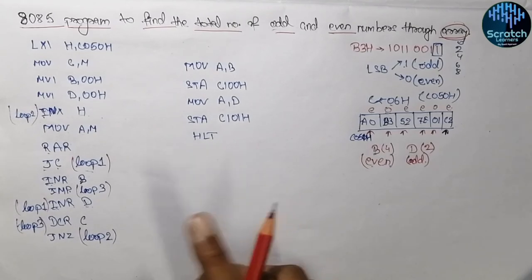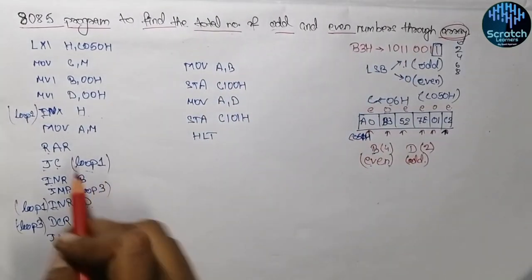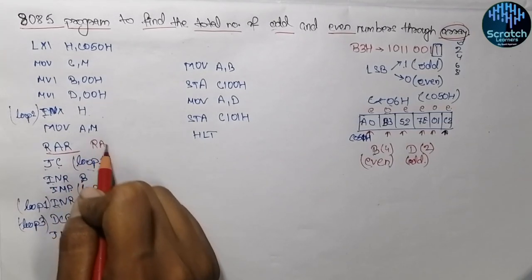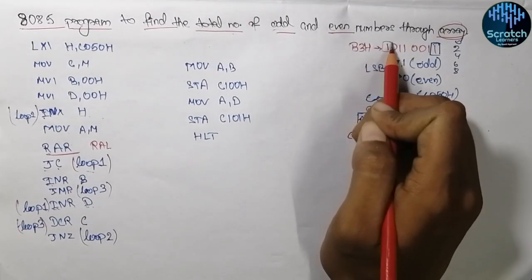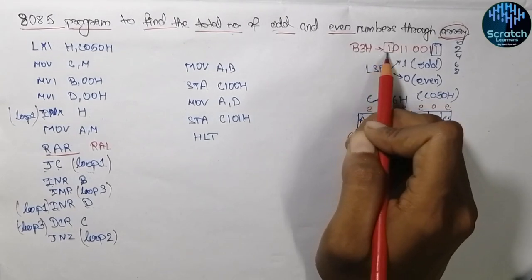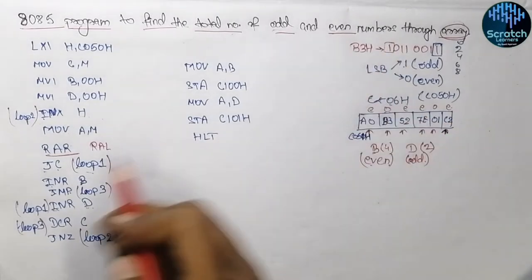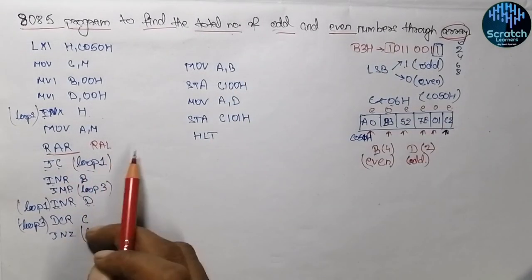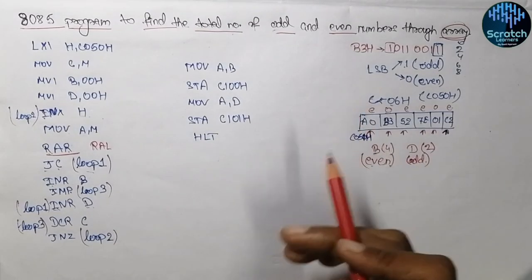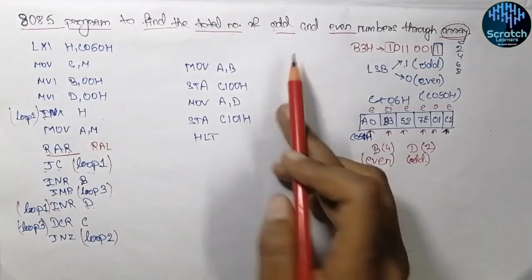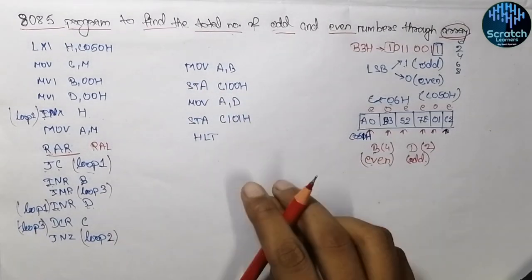By modifying just a single instruction in this program, we can also count the total number of positive and negative numbers in an array. Simply replace the RAR instruction with RAL. When checking positive or negative, we examine the most significant bit — if it is 1 the number is negative, if it is 0 it is positive. By rotating left, that MSB shifts into the carry flag and the same logic applies. There is also another method which is more precise and easier, and I will discuss it in the next video.